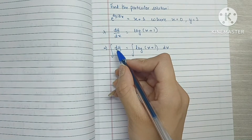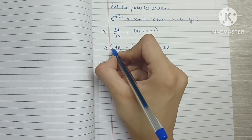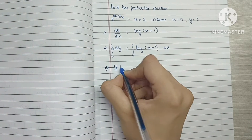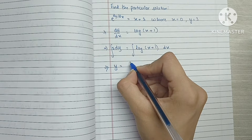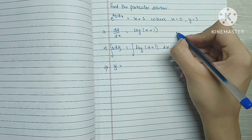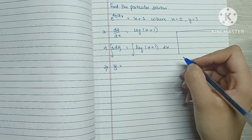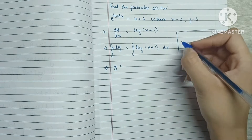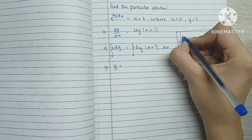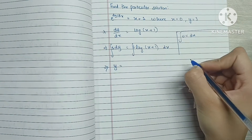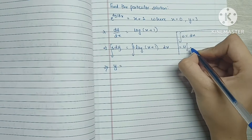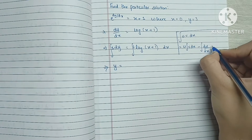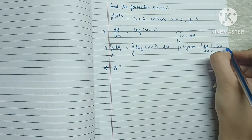The integration of dy can be written as the integration of 1 dy, which is just y. So y is equal to the integration of log(x + 1). Over here we're going to be using the ILATE rule. We can write this as 1 into log(x + 1). The integration of uv with respect to x is equal to u into the integration of v dx, minus the integration of the differentiation of u into the integration of v dx.